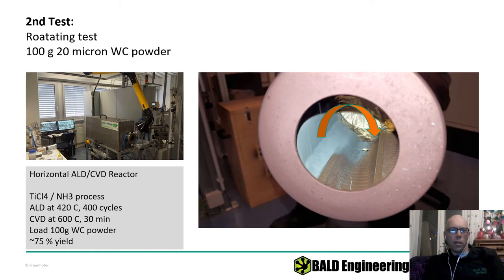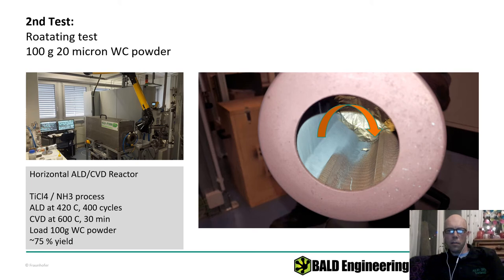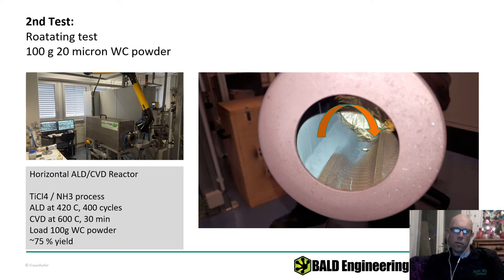So we loaded up in the drum. You can see this drum — it has a bronze color now because we've coated it so many times with titanium nitride. The powder falls in a waterfall motion as the drum rotates — unfortunately the arrow in the slide is in the wrong direction, it rotates the other way. We pulse ALD into this: chup, chup, chup.